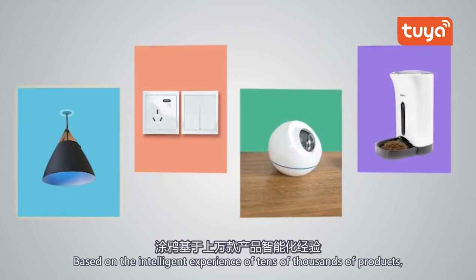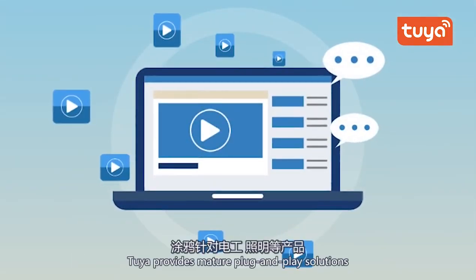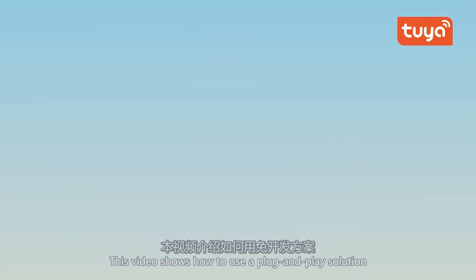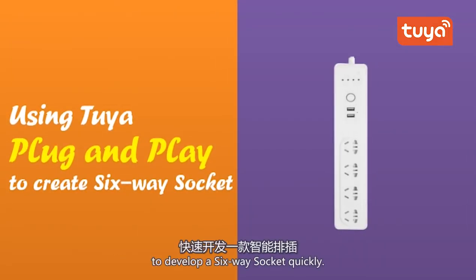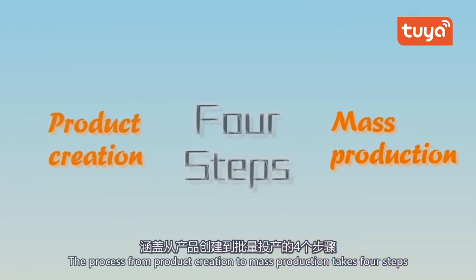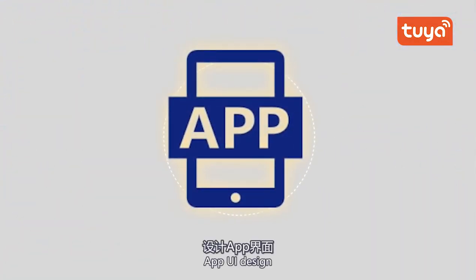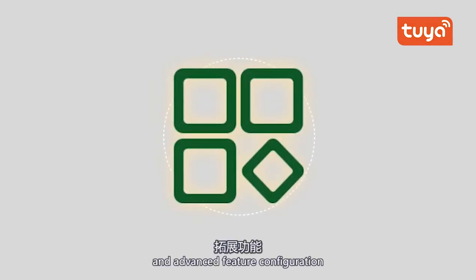Based on the intelligent experience of tens of thousands of products, QAR provides mature plug-and-play solutions for electrical engineering and lighting products. This video shows how to use a plug-and-play solution to develop a six-way socket quickly. The process from product creation to mass production takes four steps: function definition, FUI design, hardware debugging, and advanced feature configuration.